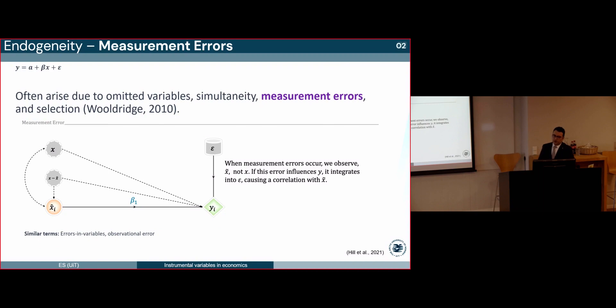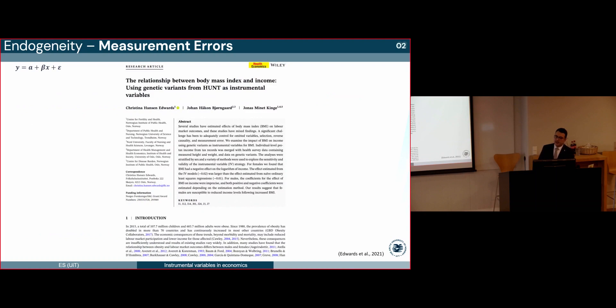The third cause of endogeneity is measurement error. Bias is created if any error in measuring X resulting in X tilde rather than X is correlated with Y. Some similar terms refer to measurement error, such as errors in variables and observational error. Let's consider a real-world example from Edwards et al.'s study on the relationship between body mass index and income. The study acknowledged potential measurement errors in self-reported weight and height. Particularly heavier individuals often under-report their weights. This can have an impact on the study outcomes. In response to these errors, the researchers applied specific correction method and after this adjustment, their results remained consistent. A key aspect of their approach was using individuals' genotype, which is randomly assigned from parental genes at conception as an instrumental variable.